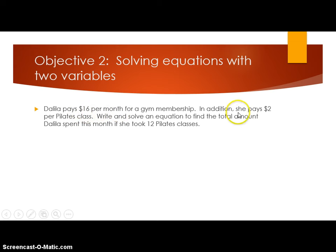So my equation is going to look like this. The cost per month is $16 for the upfront fee and $2 per Pilates class. So I have two variables, cost and the number of Pilates classes. I know she took 12, so I'm going to replace or substitute 12 into this equation for P. I'm going to multiply and then add these two numbers together for a total cost of $40.